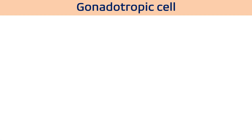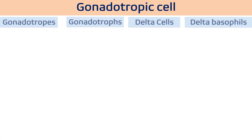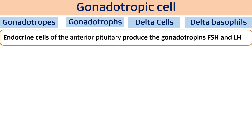These gonadotropins are produced by specific cells called gonadotropic cells. These cells have multiple names: gonadotrops, gonadotropes, delta cells, or delta basophils. They are called basophils because they can retain only basic dye — that is why they are called basophils.